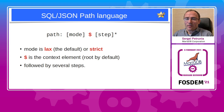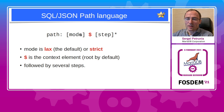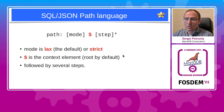A JSON path starts with the mode. The mode can be either lax, which is the default — used if it's not specified — or strict. Then comes the dollar sign, which denotes the context element. By default it is the root of the JSON document, but some functions may use other context elements. And then it is followed by multiple steps which select the elements in the JSON document.